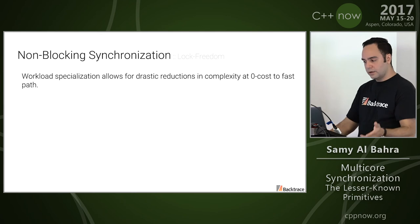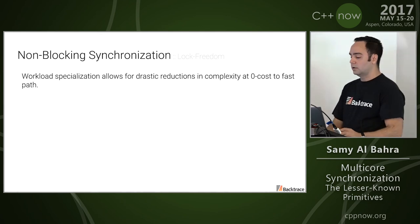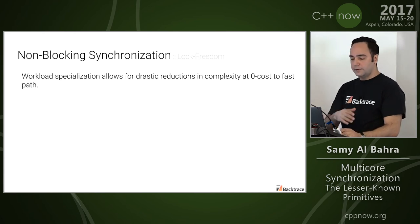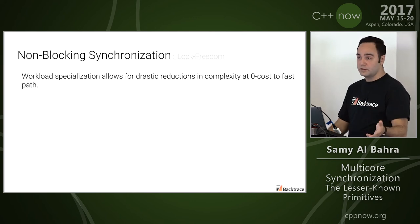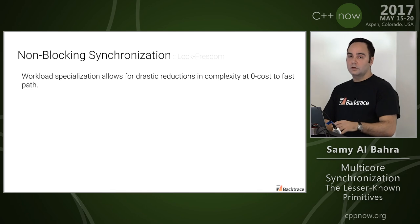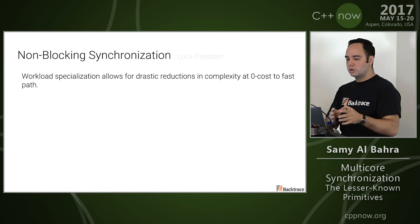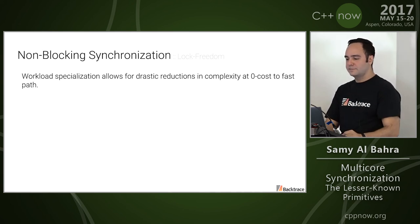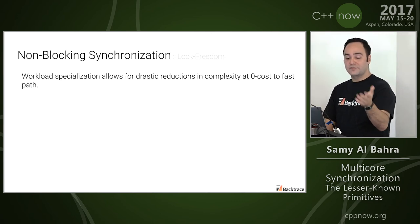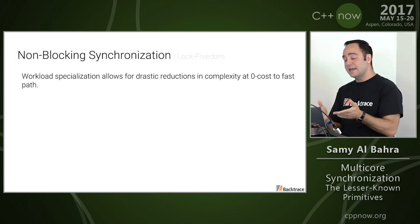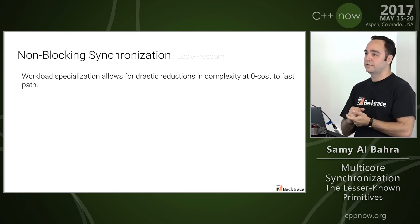There are a couple of things to apply. One is workload specialization — bounding concurrency. Rather than using a data structure that supports an arbitrary number of readers or writers, fix the number of readers or writers. That greatly reduces the complexity of the data structure. In many cases it can also mean you can get away from using heavy atomic operations, at least on x86, where any atomic operation is extremely expensive because it serializes your pipeline. You could use regular load and store operations. For example, if you're using a dynamically allocated lock-free FIFO, switch to a statically allocated ring buffer, which still provides FIFO guarantees without the runtime complexity.